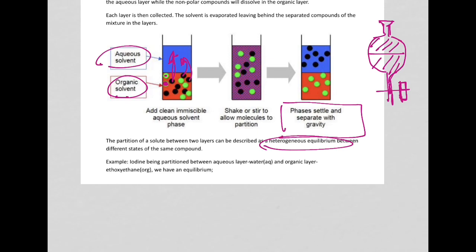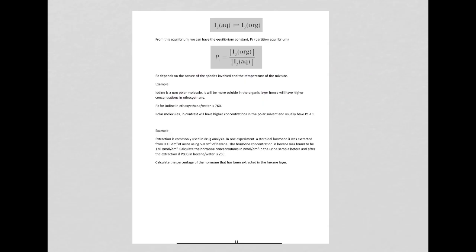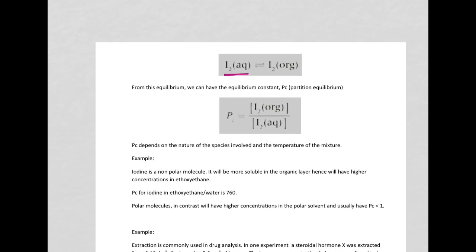Let's take one example where iodine is being partitioned between an aqueous layer, so there's water, and an organic layer. And we have an equilibrium. So you have iodine aqueous layer and iodine organic layer. So from this equilibrium, we have the equilibrium constant, PC, which is called the partition equilibrium. So partition equilibrium is the concentration in the organic layer divided by the concentration in the aqueous layer. And the value of PC depends on the nature of the species involved and the temperature of the mixture.